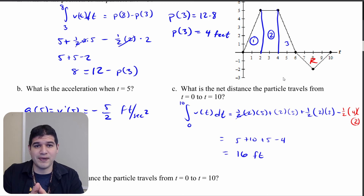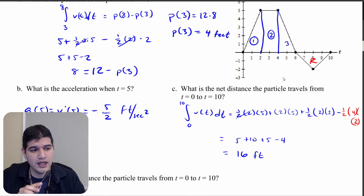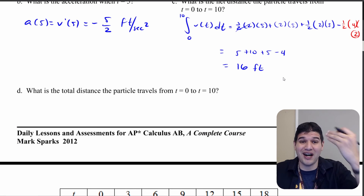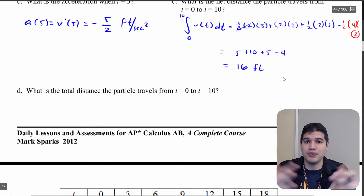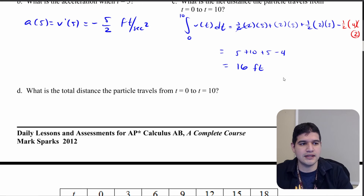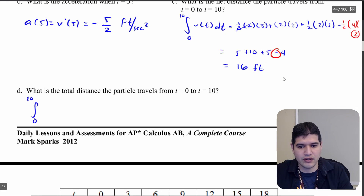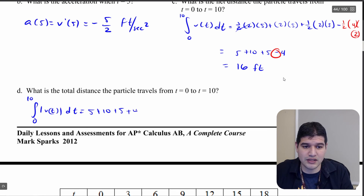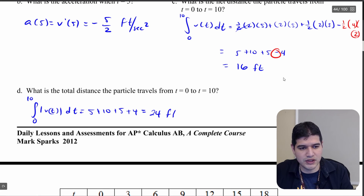The final question asks for the total distance from 0 to 10. Now that region below the x-axis becomes positive — I take the absolute value of v(t). The calculation changes only that last term: instead of minus 4, it's plus 4. So the integral of the absolute value of v(t) dt gives 5 plus 10 plus 5 plus 4, which equals 24 feet.